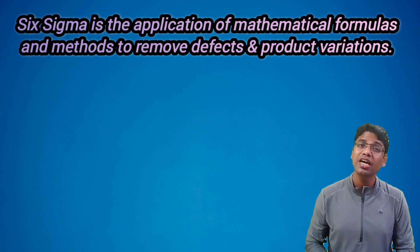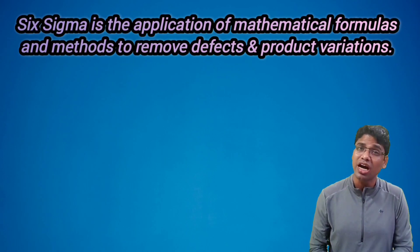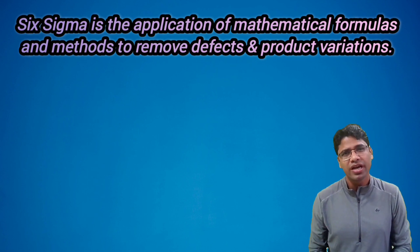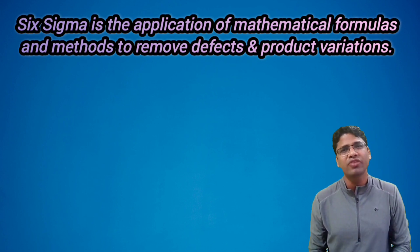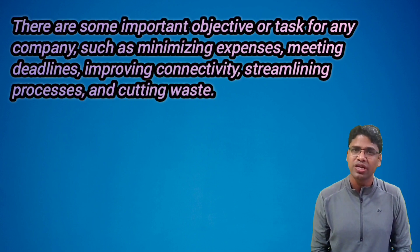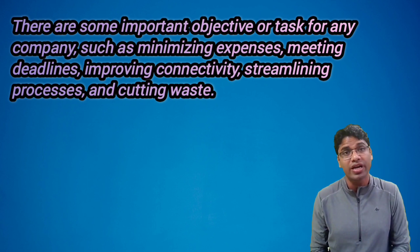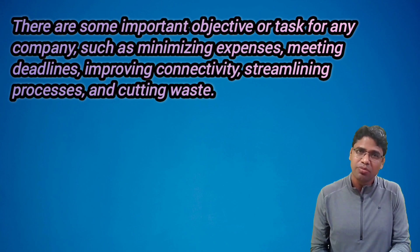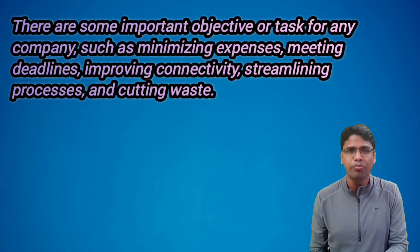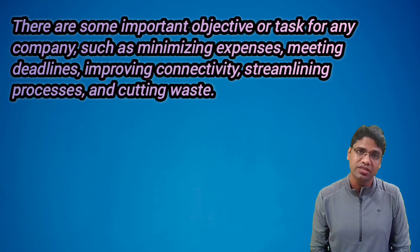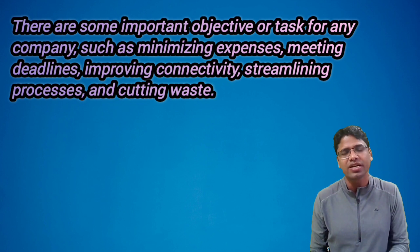Six Sigma is an application of mathematical formulas and methods to remove defects and product variations. Six Sigma's aim is to enhance and increase productivity in the process and product. There are some important objectives and tasks for any company, such as minimizing expenses, meeting deadlines, improving connectivity, streamlining processes, and cutting waste.